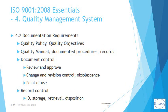Clause 4.2 deals with documentation requirements. Specifically required are a quality policy, quality objectives, the quality manual describing or referencing documented procedures, and records which provide evidence of conformity to QMS and other requirements, and to demonstrate the effective operation of the procedures making up the QMS.